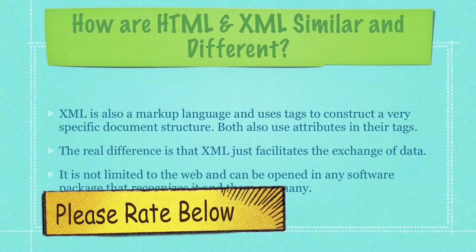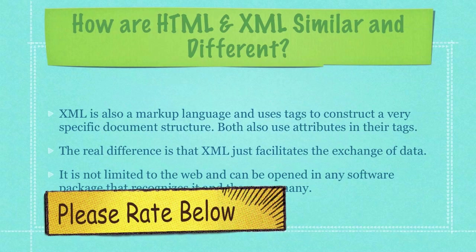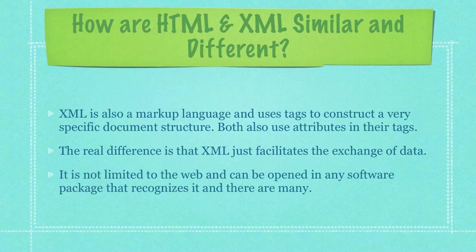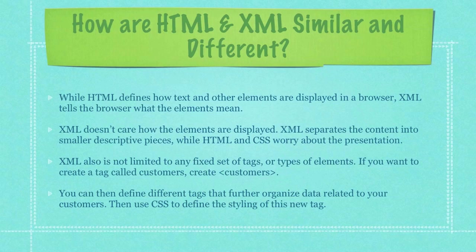So what makes HTML and XML similar as well as different? XML is also a markup language and uses tags to construct a very specific document structure. Both also use attributes in their tags. The real difference is that XML just facilitates the exchange of data. It is not limited to the web and can be opened in any software package that recognizes it, and there are many. While HTML defines how text and other elements are displayed in a browser, XML tells the browser what elements mean. XML doesn't care how the elements are displayed.